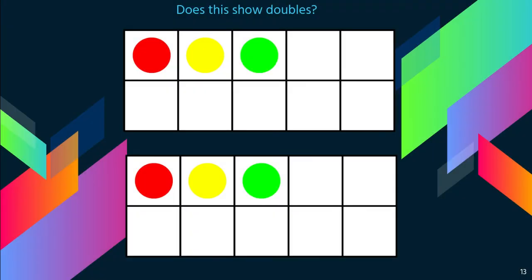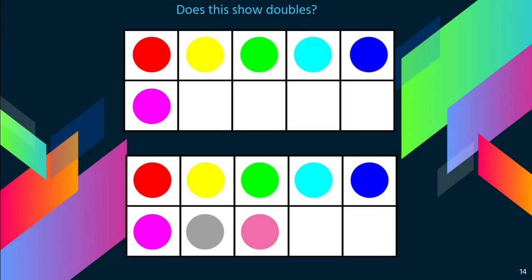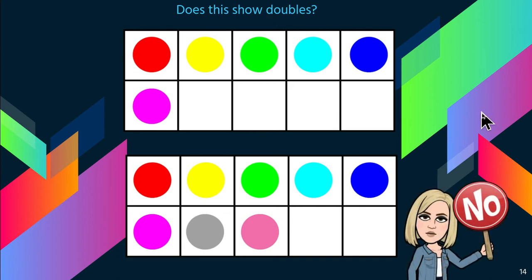Does this show doubles? Yes. Does this show doubles? No, because the top one has six and the bottom one has eight. Those are not the same.